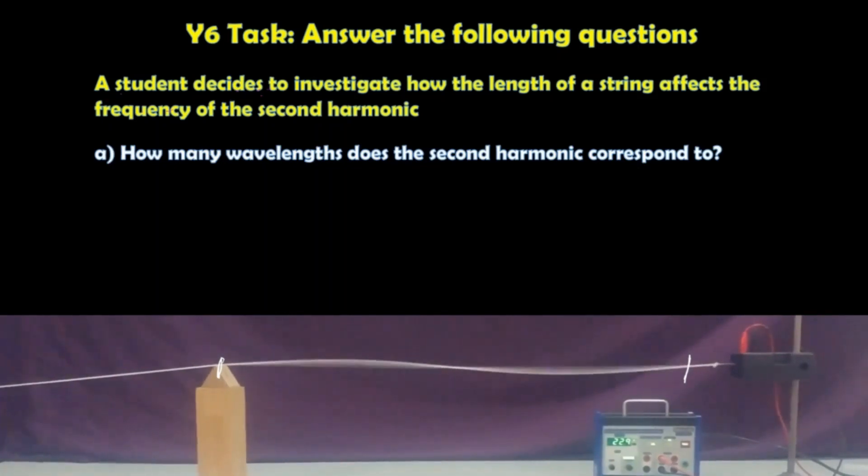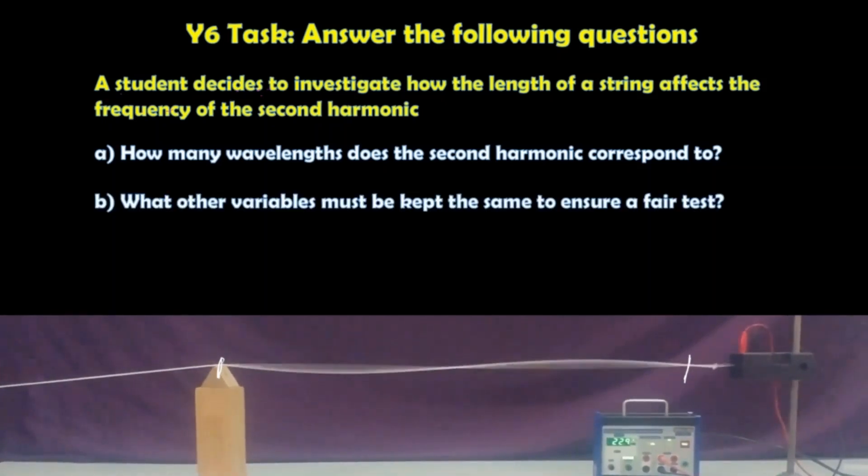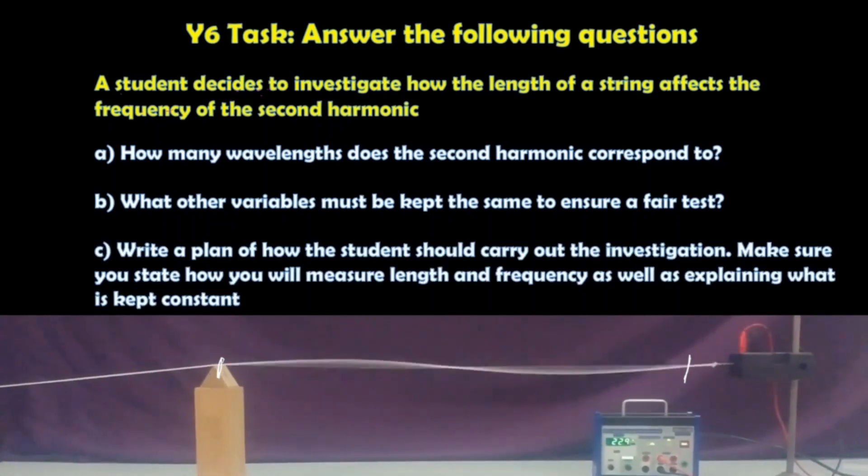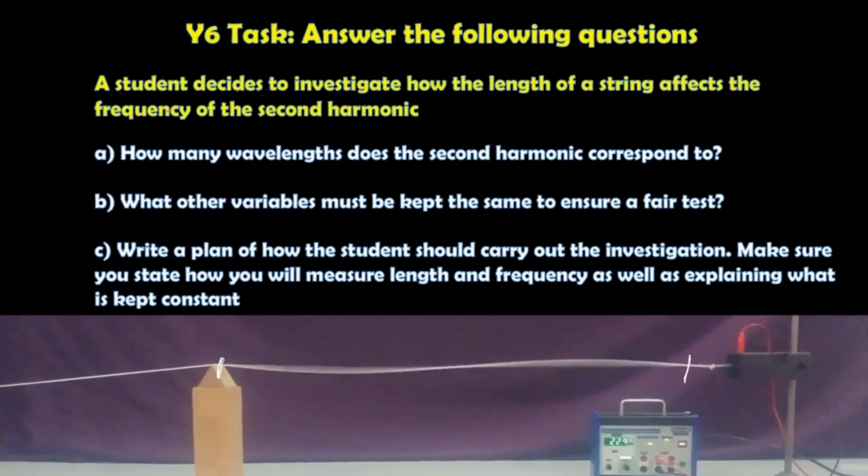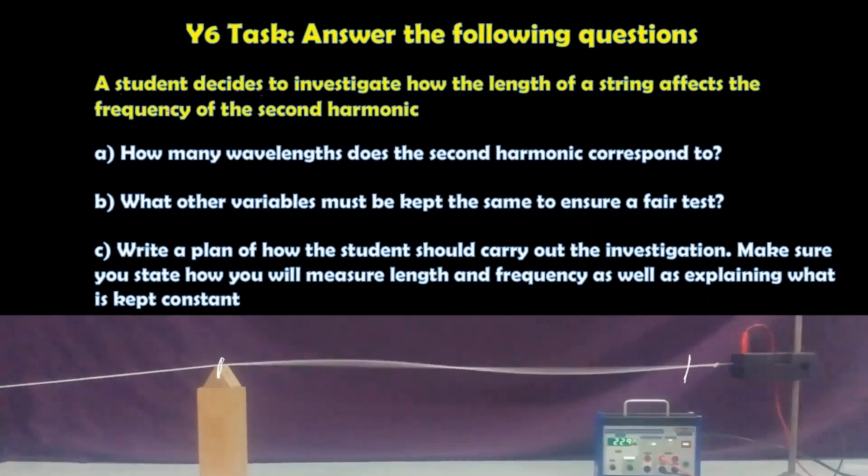Question A: How many wavelengths does the second harmonic correspond to? The other variables must be kept the same to ensure a fair test. C: Write a plan of how the student should carry out the investigation. Make sure you state how you will measure length and frequency as well as explaining what is kept constant.